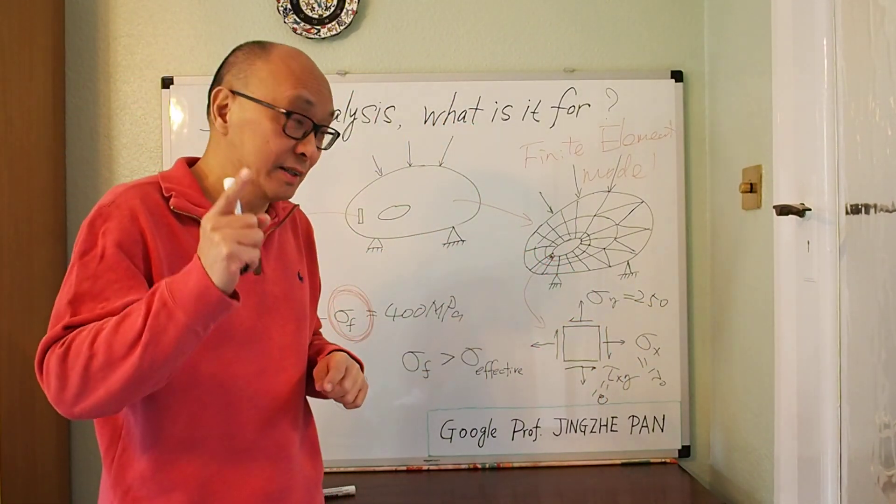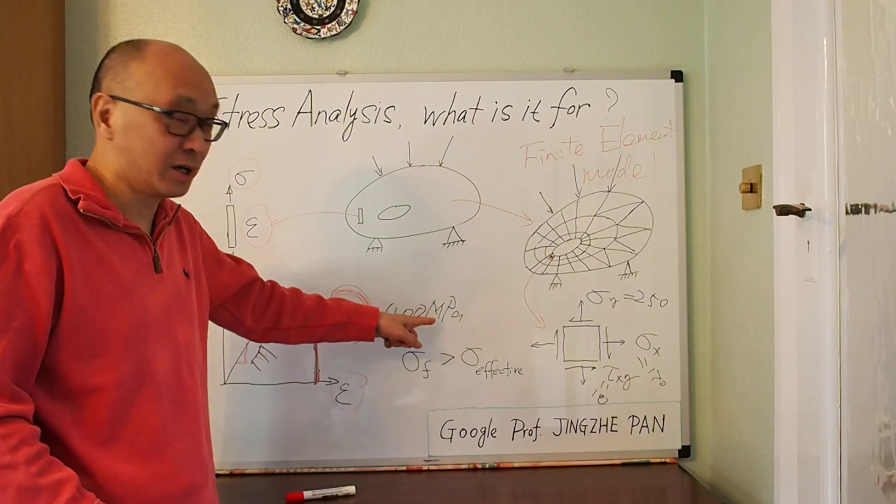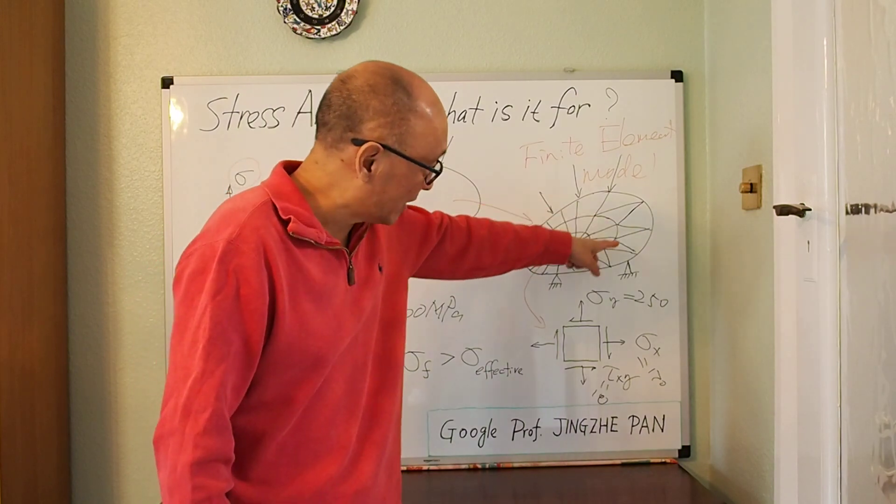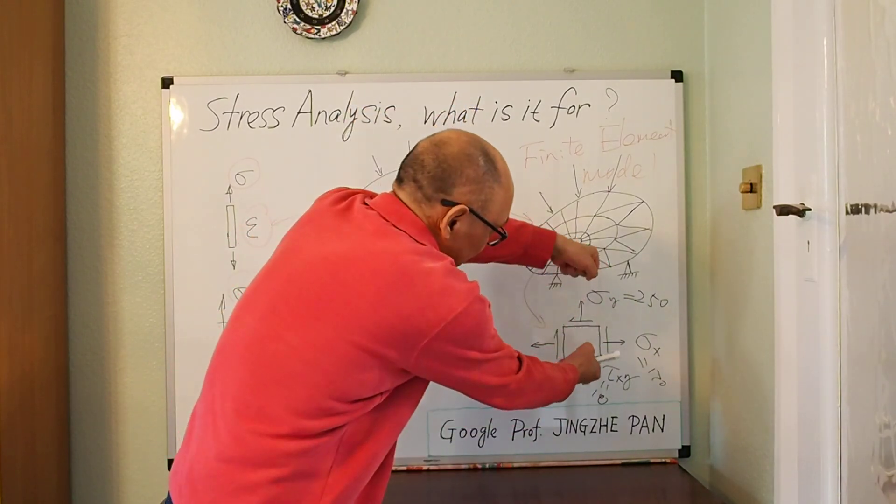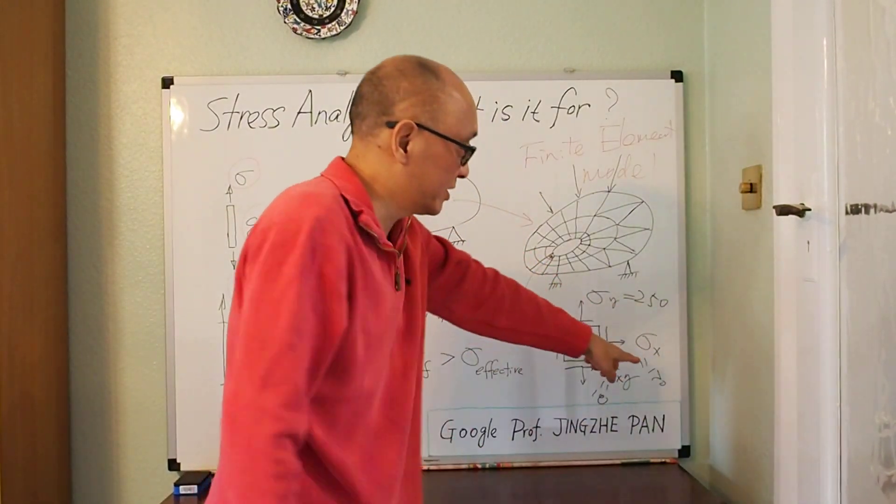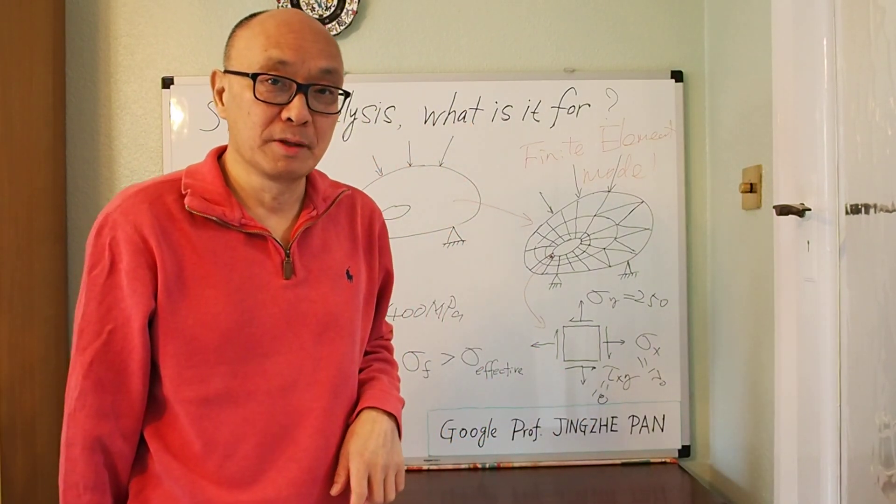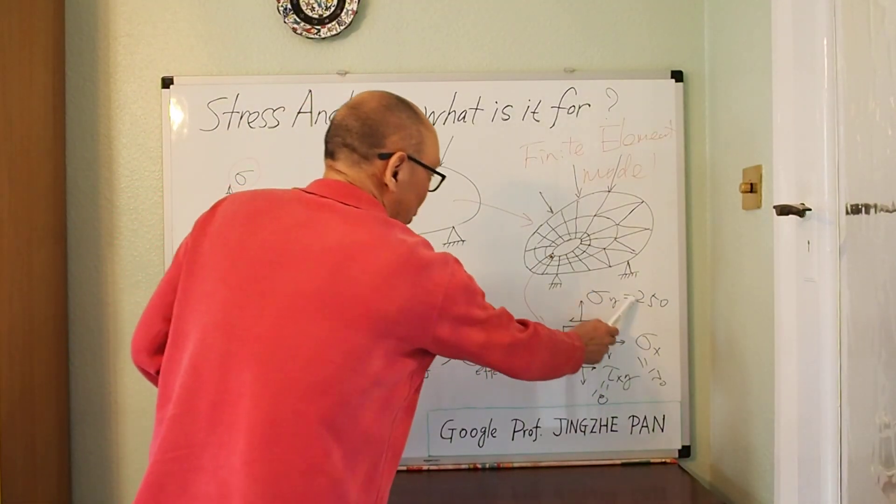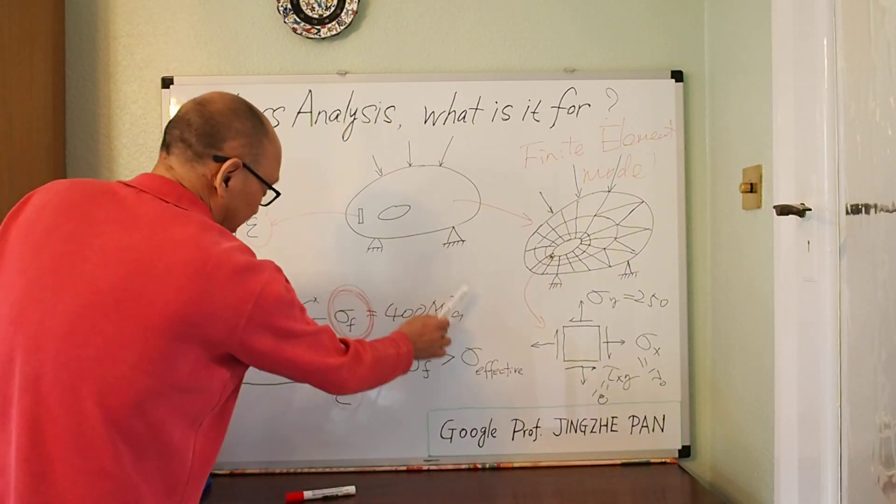So the question now you have to answer is this. I know that the material, the strength of the material is 400 megapascals. The stress you get from this analysis, and you look at one point, you look at every other point, but let's say you look at that one point. And that one point, I have this set of stress. The material is stretched in this direction with a value of 250 megapascals, in the horizontal direction with 170 megapascals, and with a shear stress of 10 megapascals. The judgment you have to make now is, is this safe?